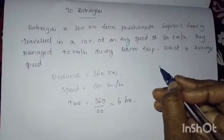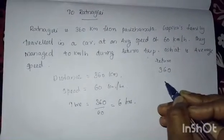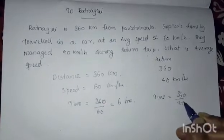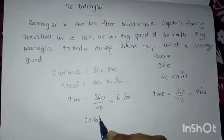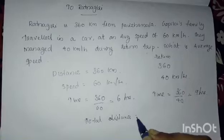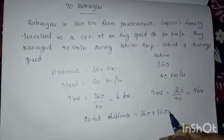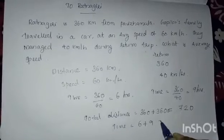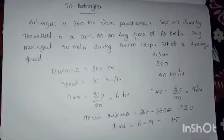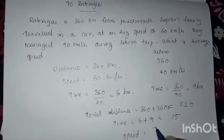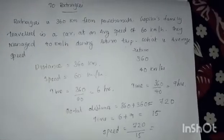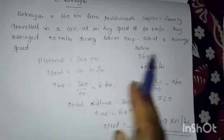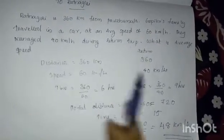For the return trip, the distance is the same — 360 km — but the speed is 40 km per hour. So the time is 360 divided by 40, which is 9 hours. The total distance is 360 plus 360, which equals 720 km. The total time is 6 plus 9, which is 15 hours. Dividing 720 by 15 gives us an average speed of 48 km per hour for the entire journey.